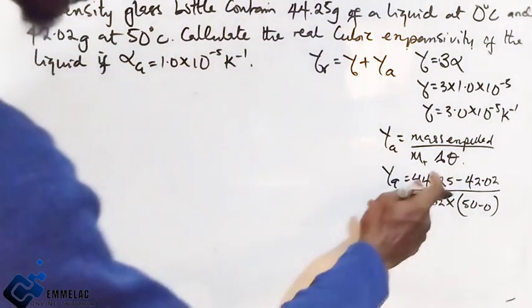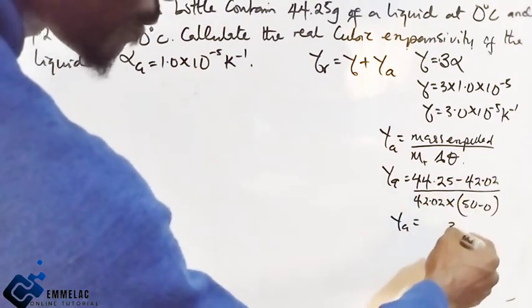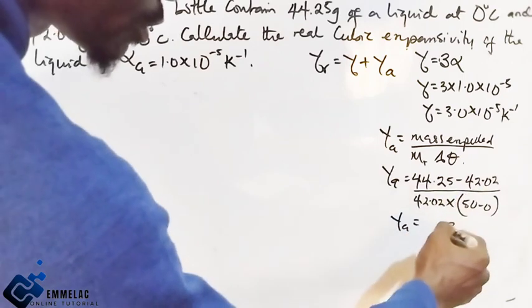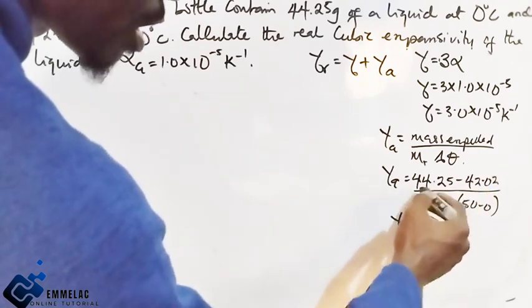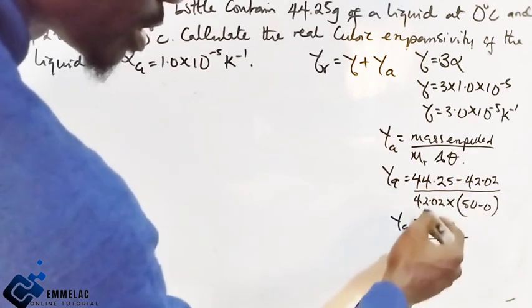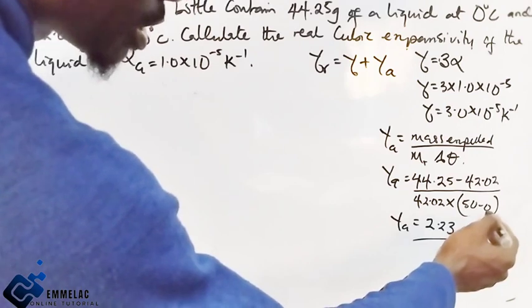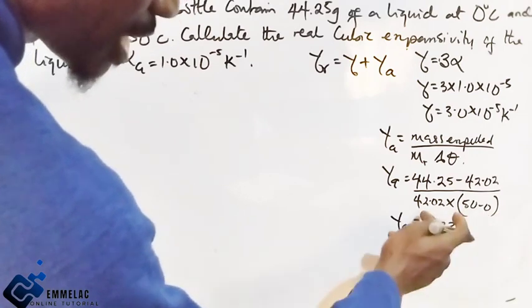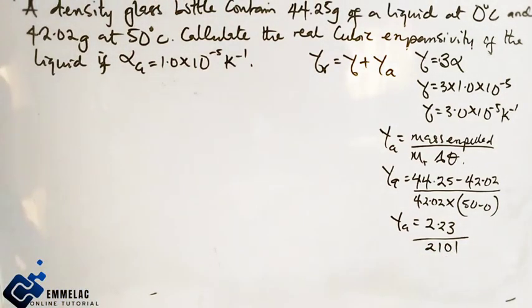This minus this will give us 2.23. Then this times this, 50 minus 0 is 50, times the whole of this should give us 2101. If you punch it on your calculator, you should have that.